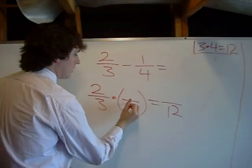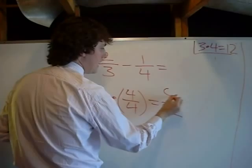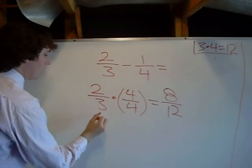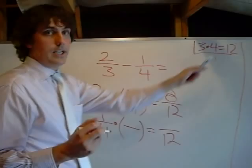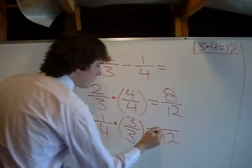So, I put a 4 here. 4 is on the bottom. 4 has to be on top. 2 times 4 is 8. So, 2 thirds is the same as 8 twelfths. Let's do 1 fourth now. 1 over 4 times a clever form of 1 equals some number over 12. So, 4 times 3 is 12. So, 3 is on the bottom. 3 has to be on top. 1 times 3 is 3. So, 1 fourth is the same thing as saying 3 twelfths.